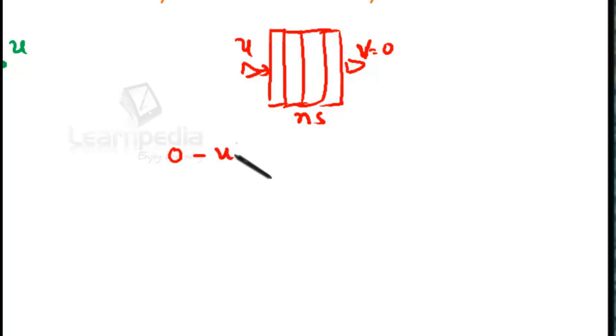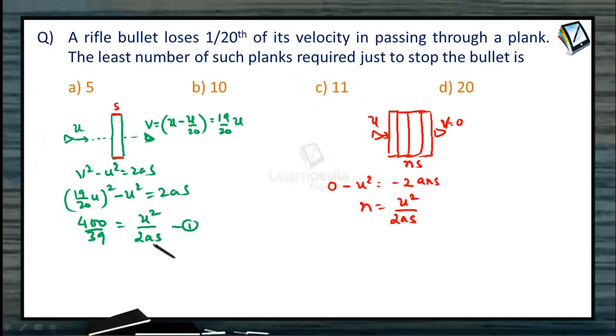0 - u² = -2 × a × n × s, or n = u²/(2as). We know the value of u²/(2as) from here.